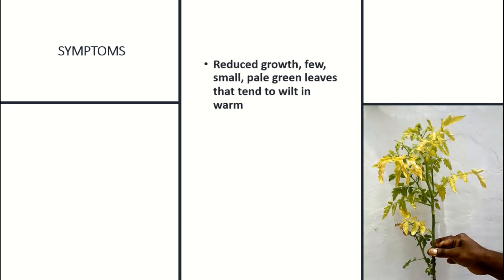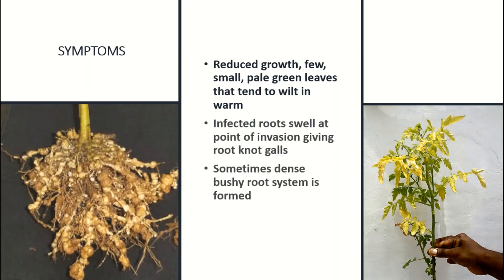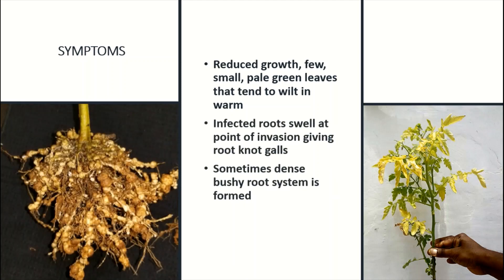So what are the symptoms? How can we identify this disease in vegetables? You can see reduced growth, a few small pale green leaves that tend to wilt in warm conditions. Infected roots swell at the point of invasion, giving root-knots or galls.